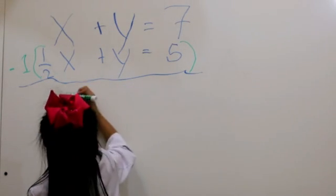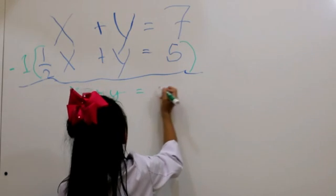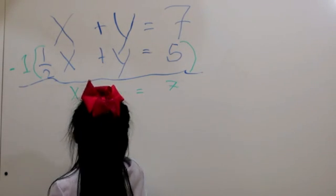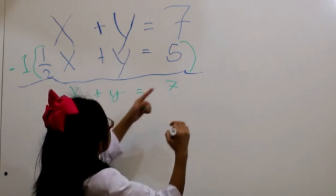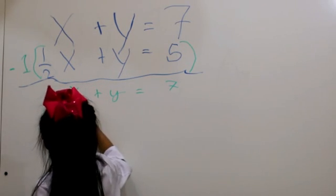Then, you copy the top equation. x plus y equals 7. And then you multiply negative 1 by every number here. So negative 1 times 1 half is negative 1 half.